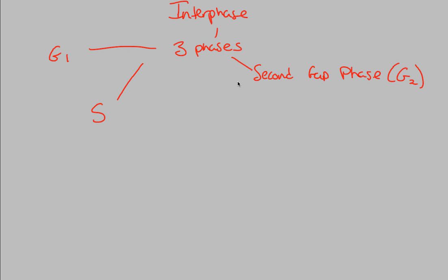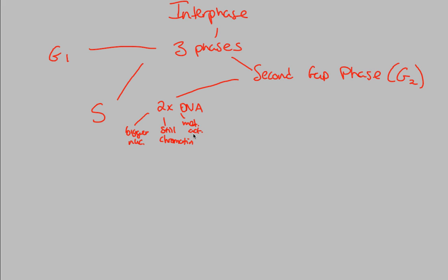Some things already established about G2: once we start the second gap phase, we now have two times as much DNA as we started with. In the G1 phase we had a certain amount of DNA; now we have double that amount. This means we're also going to have a bigger nucleus, because we need a nucleus that can support this doubling of DNA. The DNA itself is still in a chromatin form, and there's still some metabolic activity going on within the cell in preparation for division.